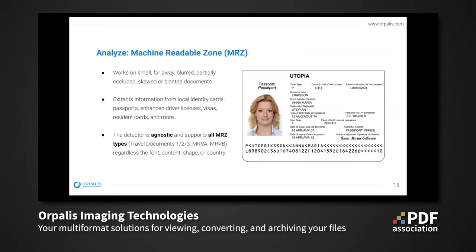ID documents like passports, visas, and other ID cards contain a zone called MRZ, making them readable by machines. The MRZ uses OCRB font and a specific number of characters and lines to encode personal information. No matter if the MRZ lines are small, far away, blurred, partially occluded, skewed, or slanted, our implementation can accurately detect and recognize every character. The detector is agnostic and doesn't decode the text to check it against predefined rules such as regex, meaning it supports all MRZ types regardless of fonts, contents, shape, or country.